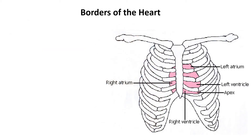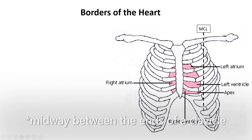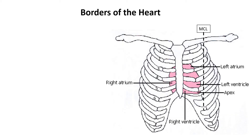Now let's talk about the surface anatomy perspective of the borders of the heart. I've got a thorax here — you can see the heart is placed retrosternally, meaning behind the sternum. When discussing surface anatomy, we use a very important imaginary line called the MCL, or mid-clavicular line, which extends midway between the clavicles.